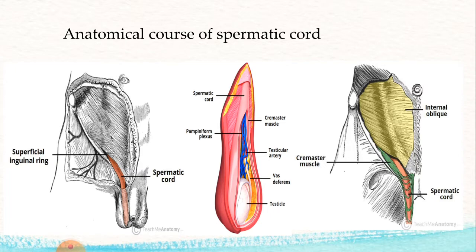Reviewing the contents of the spermatic cord: there is a testicular artery, which is a branch of the aorta, as well as the vas deferens and the pampiniform plexus. As highlighted in this image, the pampiniform plexus is a plexus of testicular veins that drains venous blood from the testes into the testicular vein.